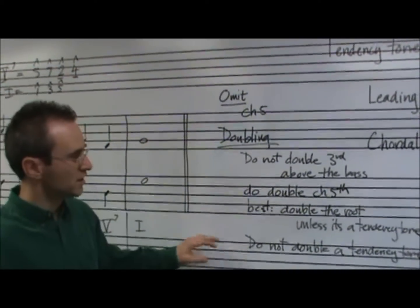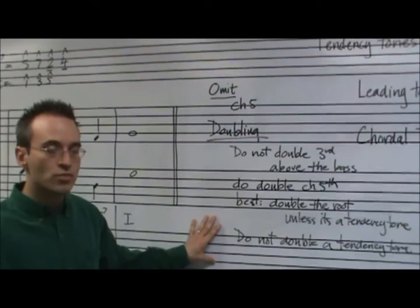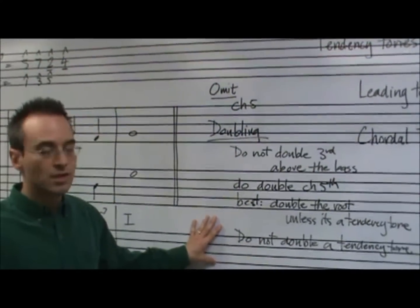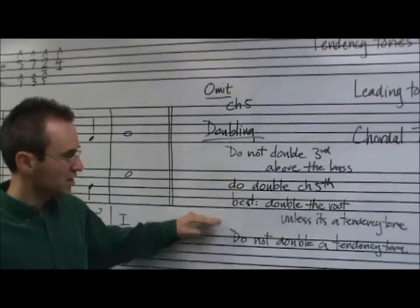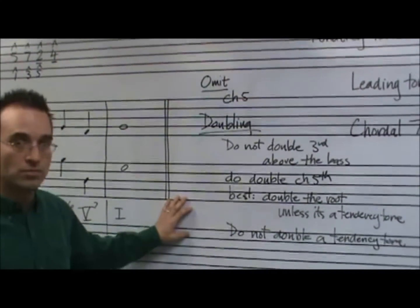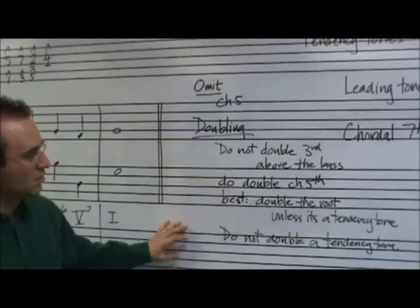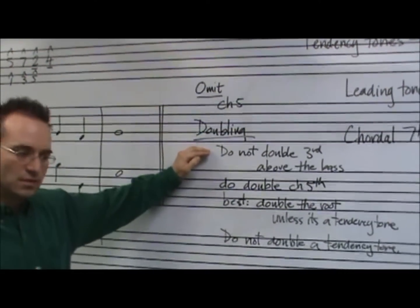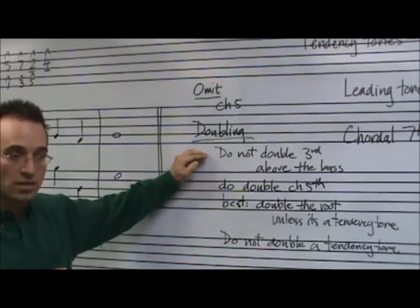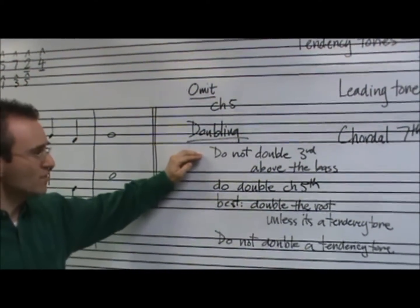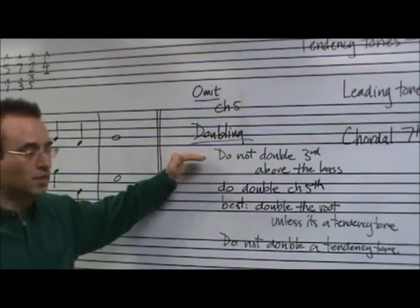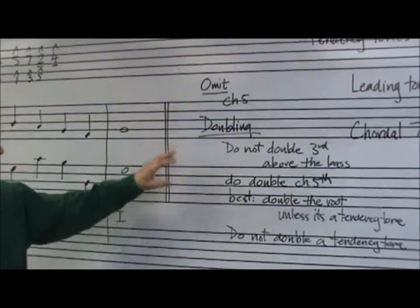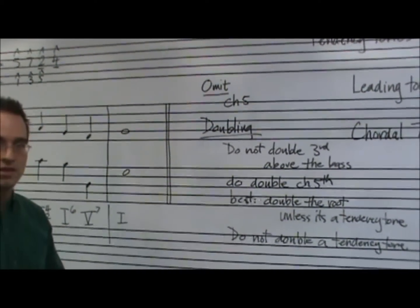If I had to summarize all this, I'd say basically this. You want to double what's most stable. Roots, if they're not tendency tones, are stable. Fifths, chordal fifths are stable. Thirds, being less pure, are less stable. And so we don't want to double them. The underlying principle, then, in doubling is, find the stable thing and double it.